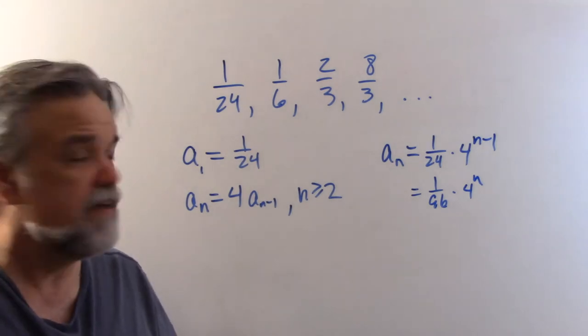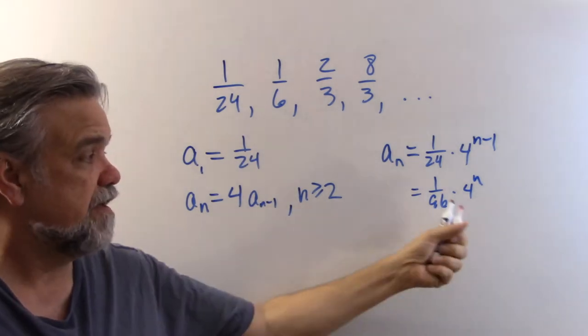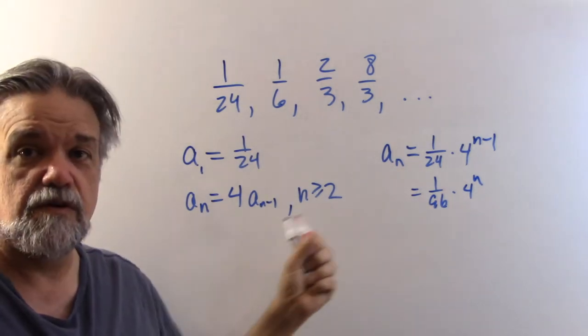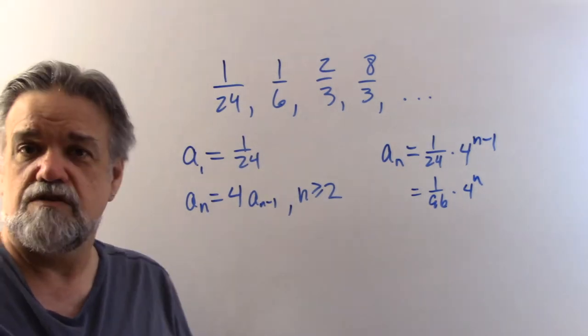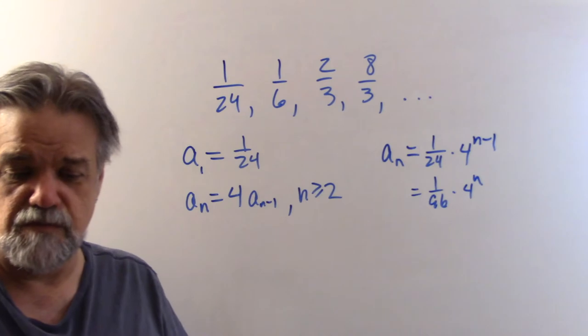We could also write this explicitly. If we're starting with 1/24 and multiplying by four each time, that's what an exponential function does. So this could be a sub n equals 1/24 times four to the n minus one. Or I could also call it 1 over 96 times four to the n — that would also work perfectly fine. Either form is your choice; both of them work.